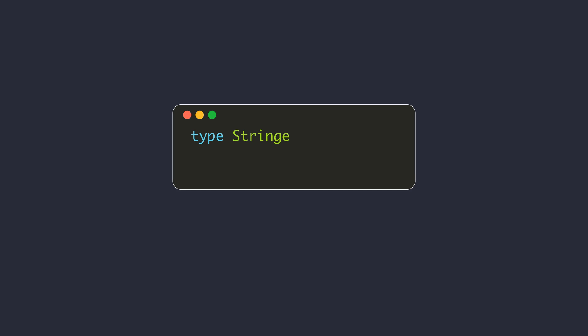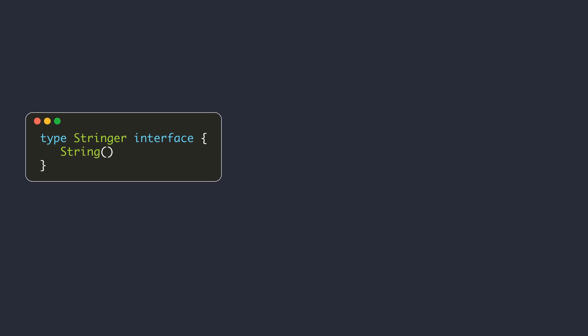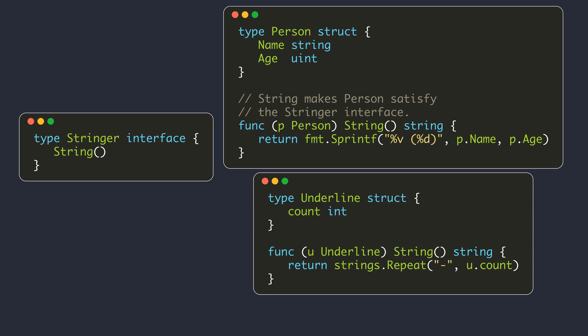Interfaces in Go provide a way to specify the behavior of an object. An example is the stringer interface defined in the fmt package in the standard library. We can define different types and implement a custom string method for those types.